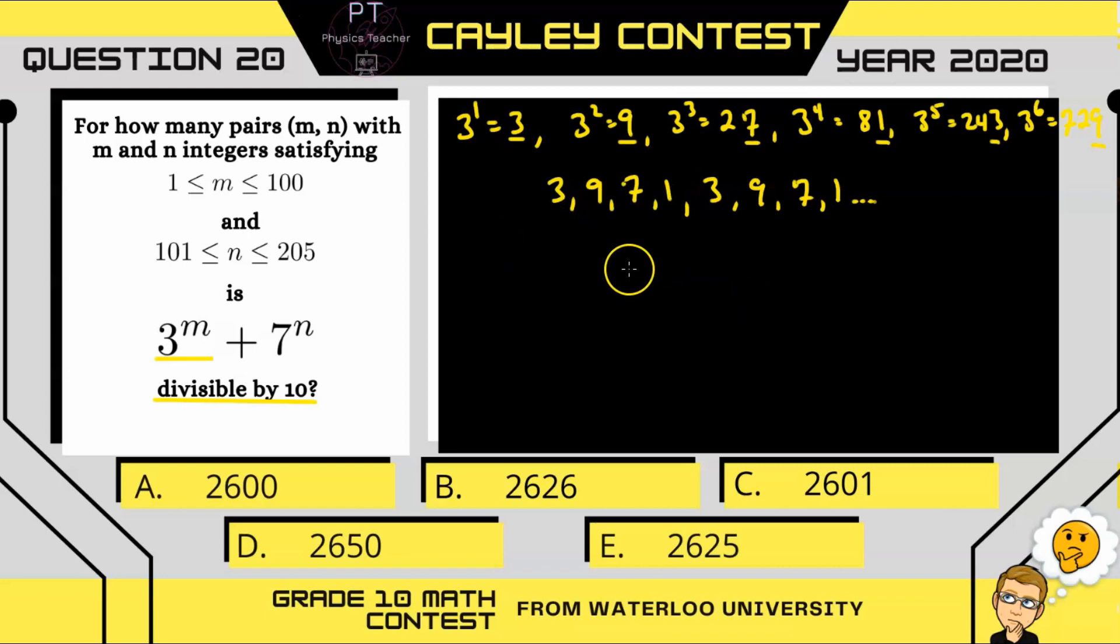Now our value for m needs to be between 1 and 100. That means, starting at 3 to the power of 1, going all the way up to 3 to the power of 100, 25 numbers will have a ones digit of 3, 25 numbers will have a ones digit of 9, and 25 numbers will have a ones digit of 7 and 1.